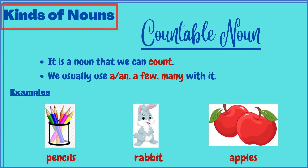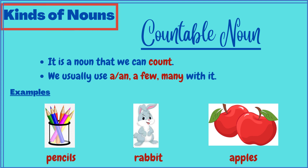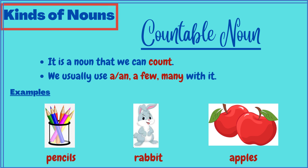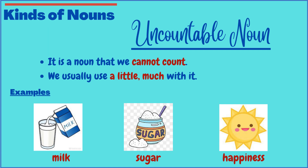The next one is the countable noun. As it is quite evident from the name, it is a noun that can be counted. A simple way to differentiate it from uncountable nouns is that the articles 'a' and 'an' and the quantifiers 'few' and 'many' can only be used with countable nouns. Examples include pencils, rabbit, and apples — all of these are countable.